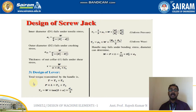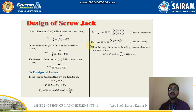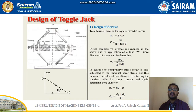Moving to the third design — the design of the lever. The total torque transmitted by the handle is T = T1 + T2, and P × L = T1 + T2. Here T1 = W × tan(φ + α) × DM/2. For uniform pressure: T2 = (2/3) × μ1 × W × (R3³ − R4³)/(R3² − R4²). For uniform wear condition: T2 = μ1 × W × (R3 + R4)/2. The handle may fail under bending stress, so the diameter is determined from M = P × L = (π/32) × DH³ × σB.